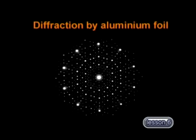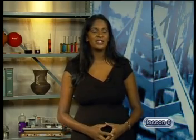When x-rays pass through very thin aluminum foil, we see a number of concentric circles that are dark and light. The bright circles are formed by constructive interference and the dark parts are formed by destructive interference. We say that the x-rays have been diffracted by the aluminum foil. Only waves can produce interference by diffraction, so x-rays definitely have a wave nature.